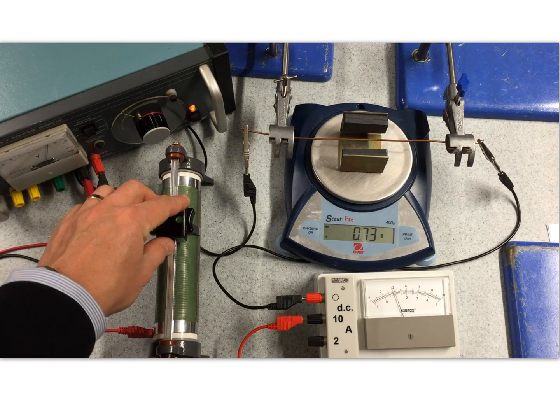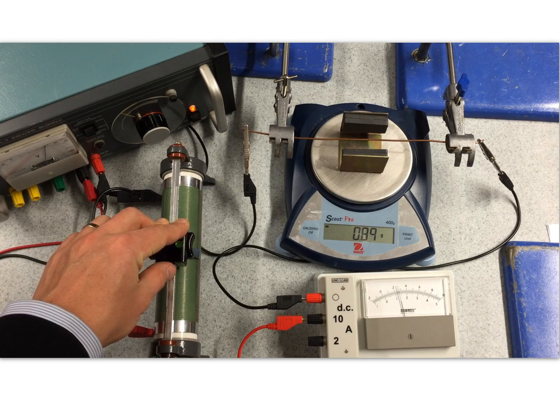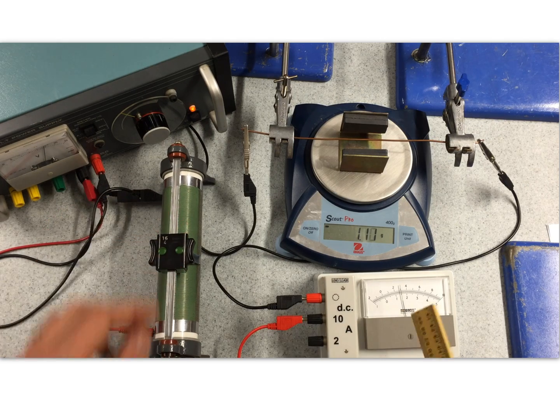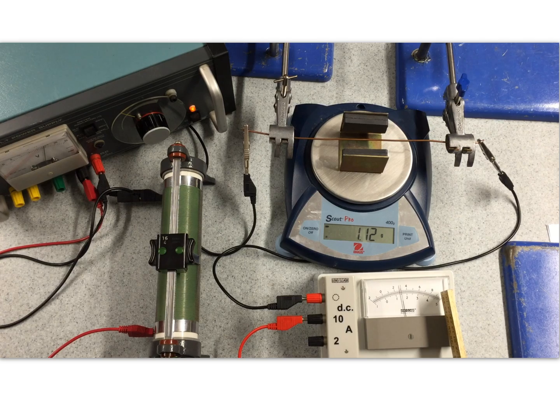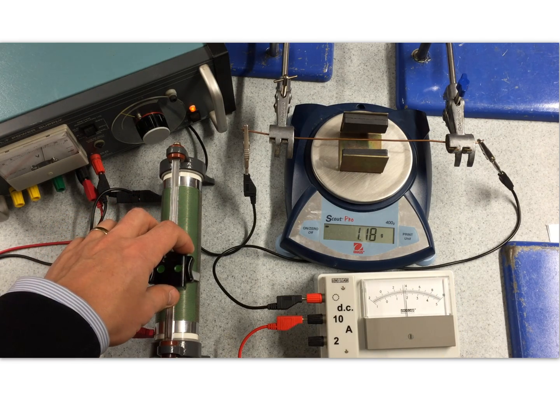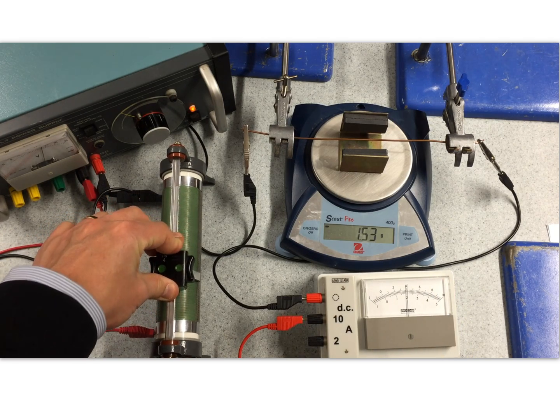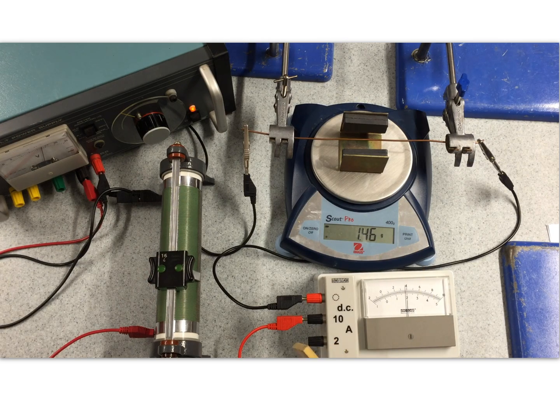And then, simply, what I do is I move this to the next position, which is three amps. Take the reading again. This is my independent variable. I change again to four amps. I retake that.